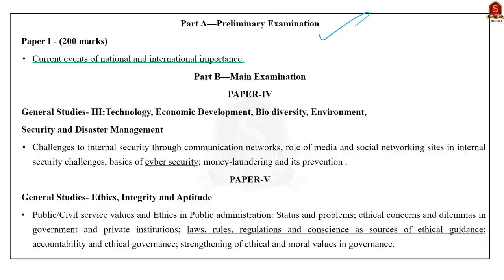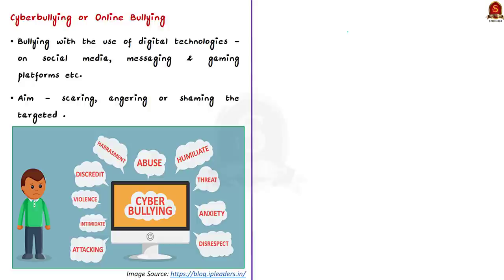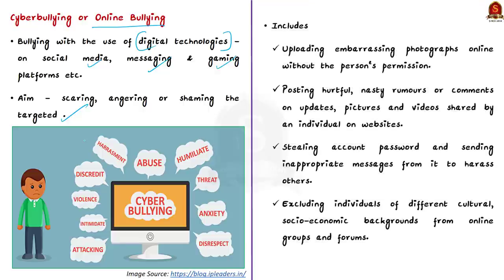This FAQ article discusses the legal provisions that can be invoked in case of online bullying. Cyber bullying, also known as online bullying, is the bullying with the use of digital technologies. It can take place on social media, messaging platforms, gaming platforms, and through mobile phones. Cyber bullying is repeated behavior mainly aimed at scaring, angering, or shaming targeted individuals or communities. Actions include uploading embarrassing photographs without permission, posting hurtful rumors or comments, stealing someone's account password to send unwanted messages, and excluding individuals of different cultural or socioeconomic backgrounds from online groups.